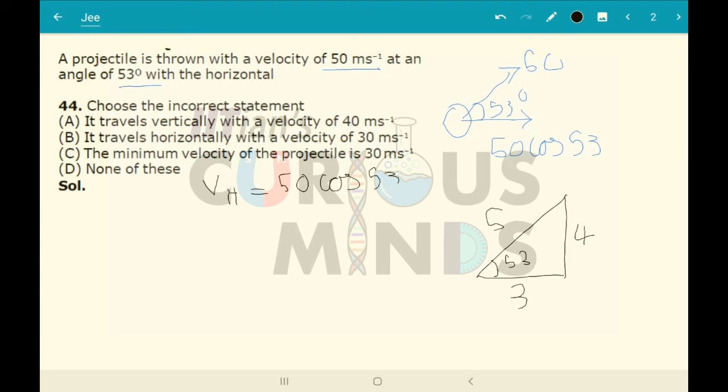Tan theta is opposite upon adjacent, so 4 by 3. Cos theta here is 3 by 5, so cos 53 will be 3 by 5.